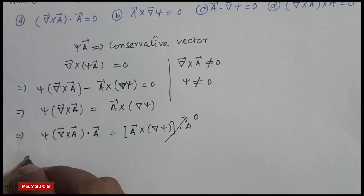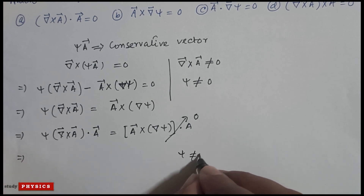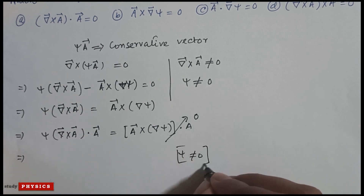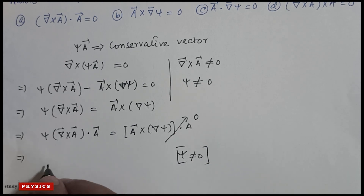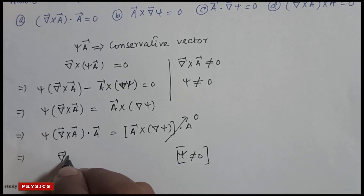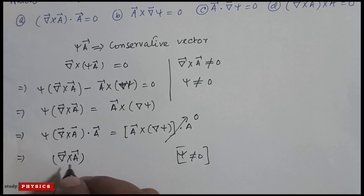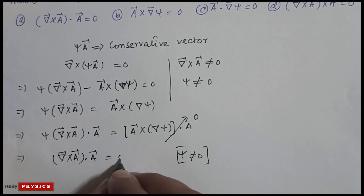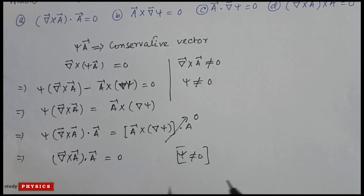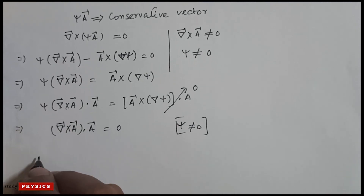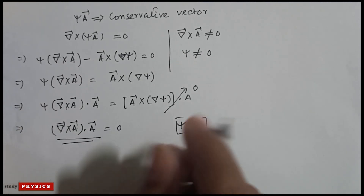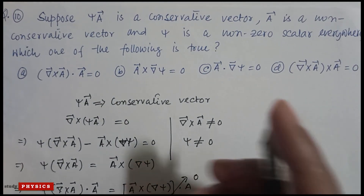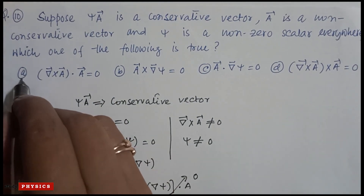Since ψ is non-zero, we cannot say ψ = 0, so curl(A) · A = 0. You can also remember that the divergence of a curl is always zero. Therefore the correct option is A.